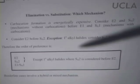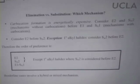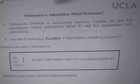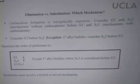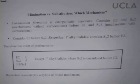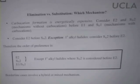The exception is primary alkyl halides, where SN2 is considered before E2. Between E1 and SN1, which one always occurs faster? When comparing rates of multi-step mechanisms, you look at the rate-determining step. The rate-determining step for SN1 is ionization of a carbon-leaving group bond; the rate-determining step for E1 is also ionization of a carbon-leaving group bond. They have exactly the same rate-determining step, which means we can't differentiate between the two in terms of rate.